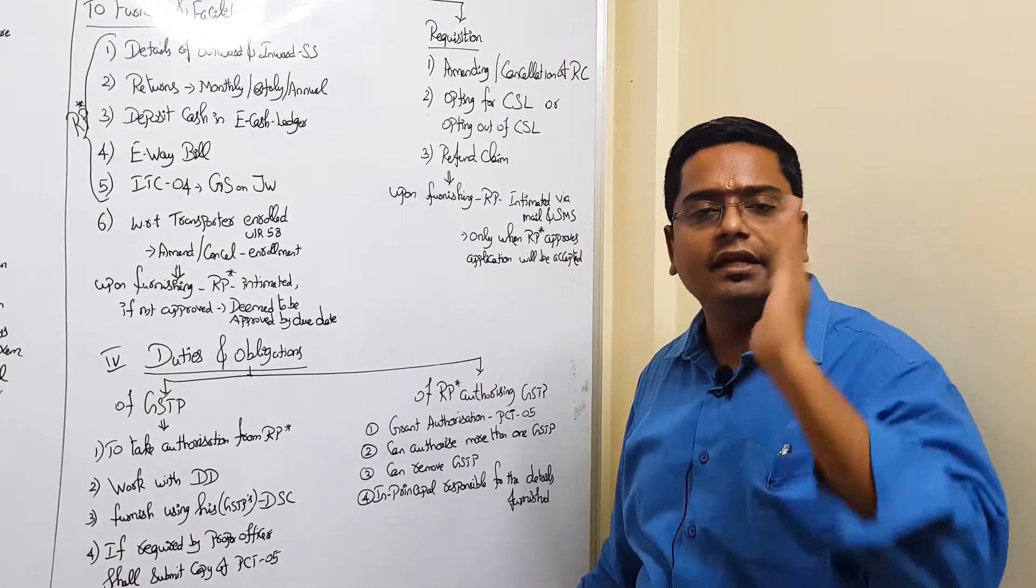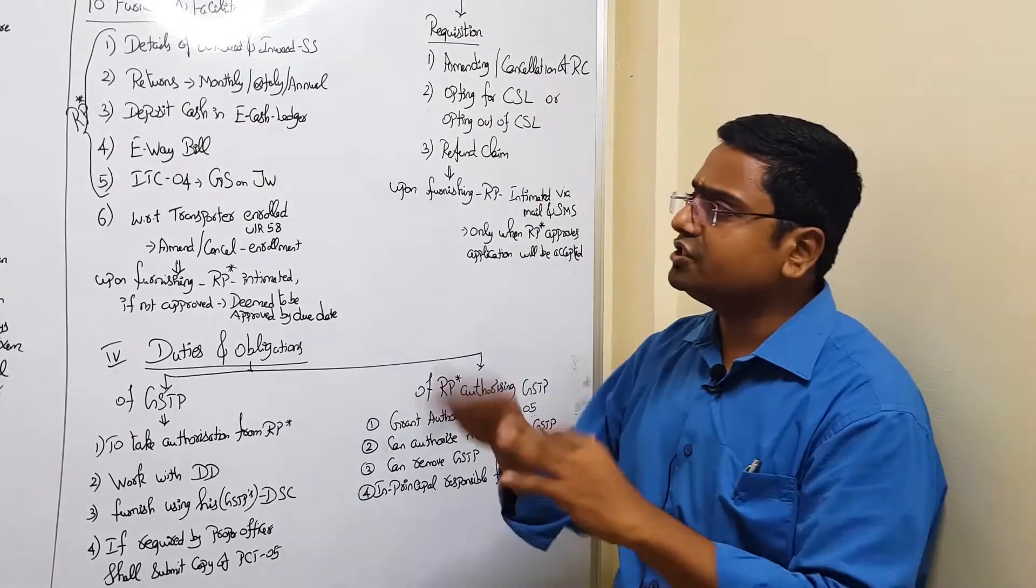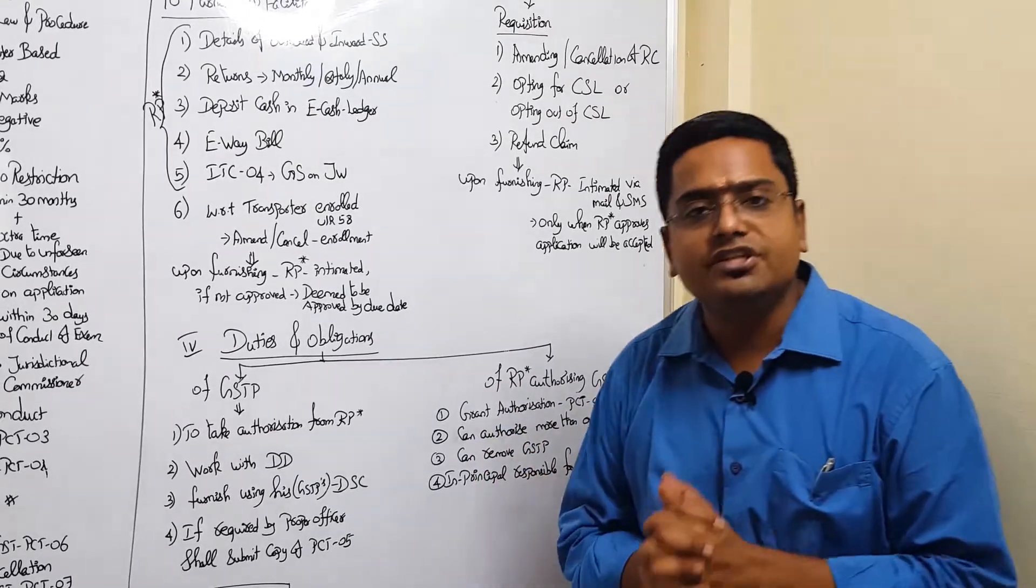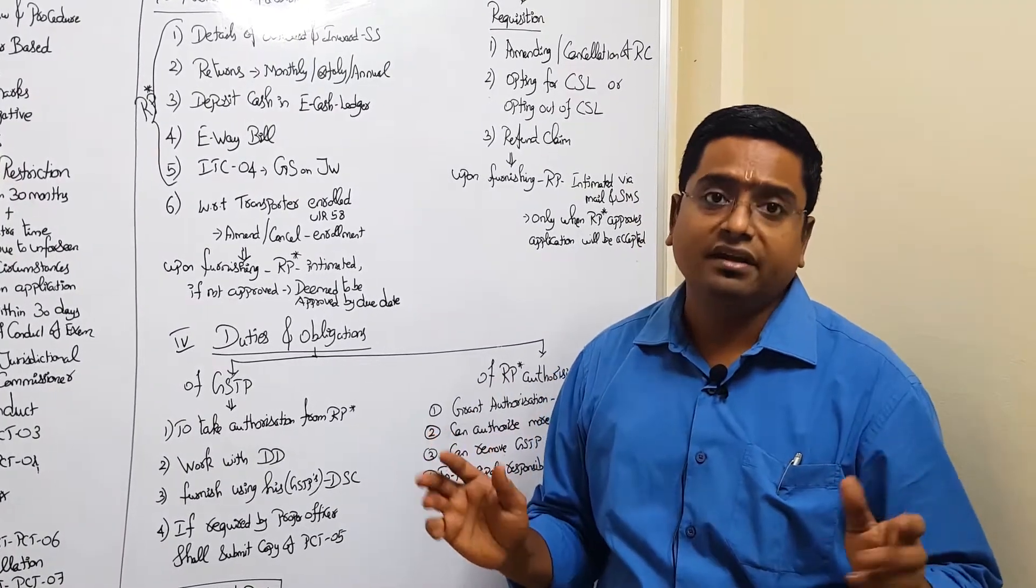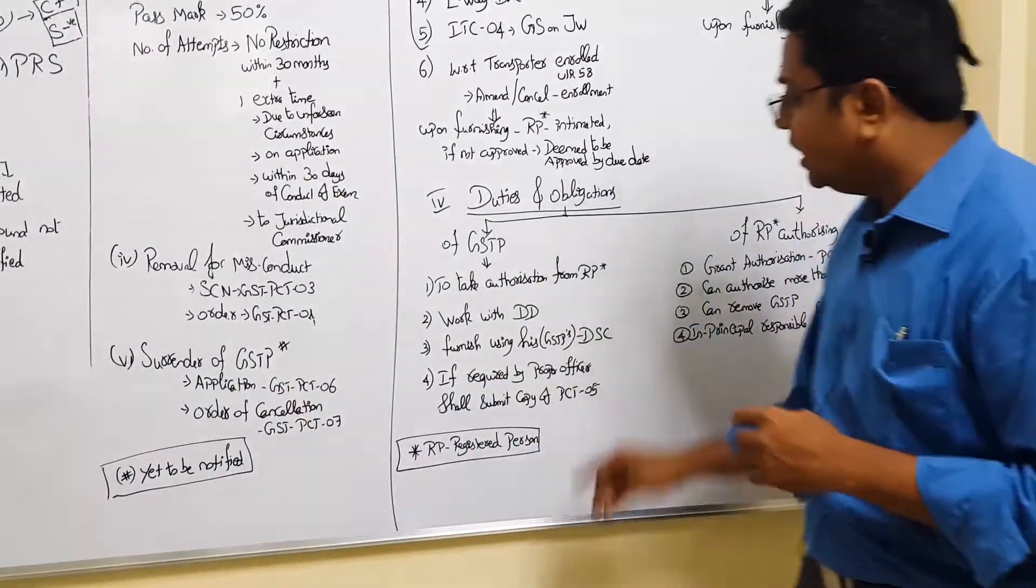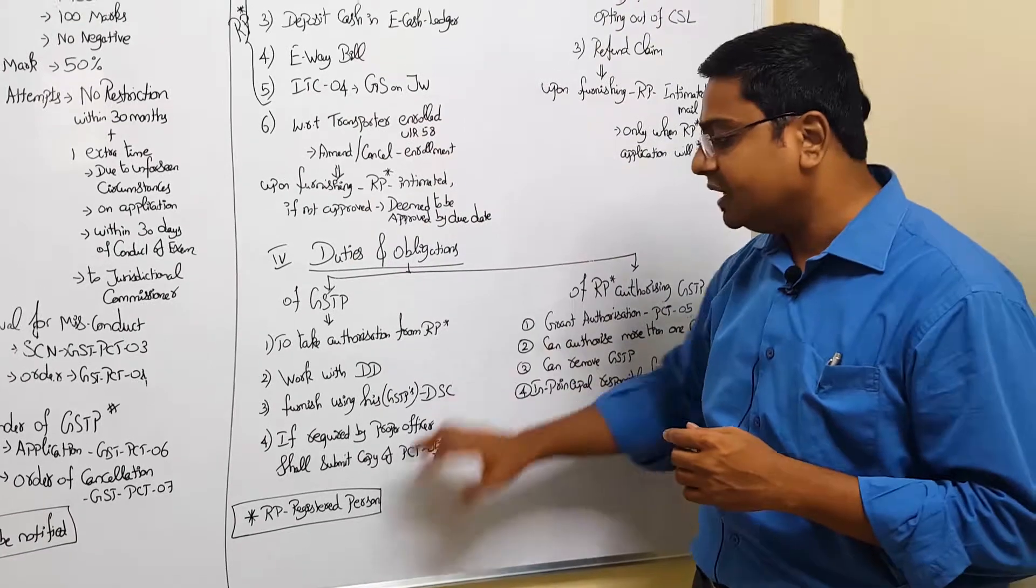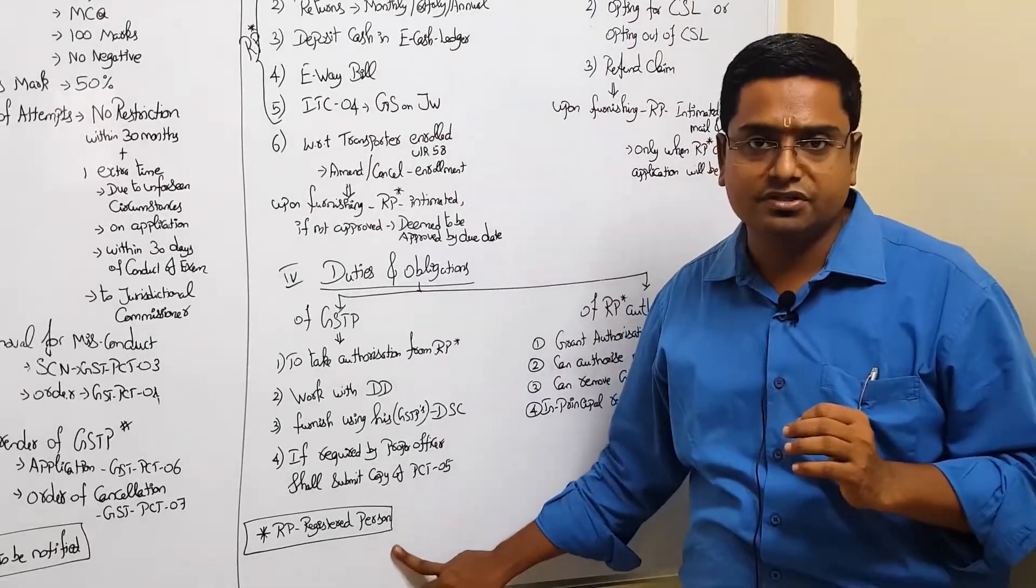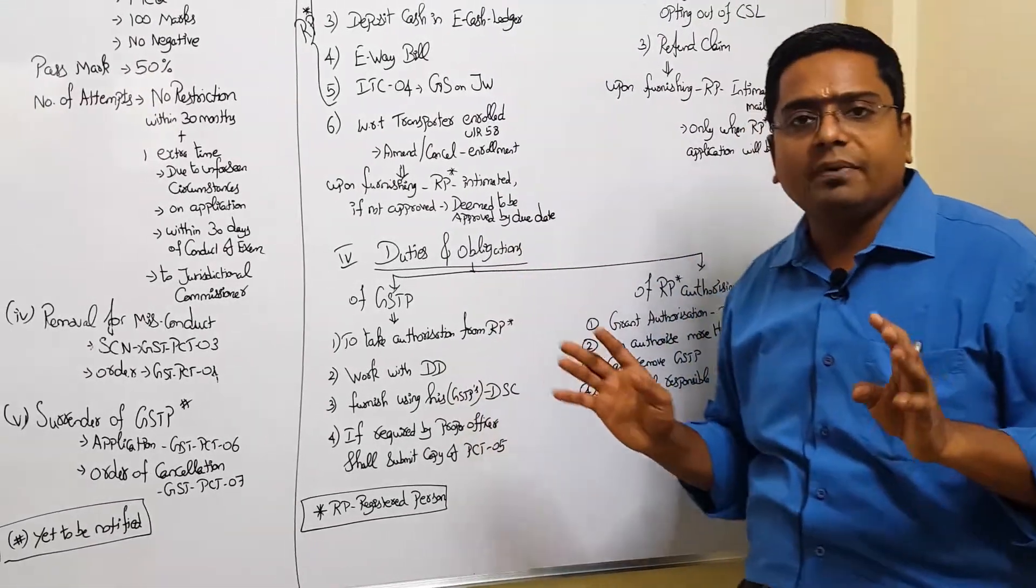Finally, the principal responsibility of ownership of details furnished by the GSTP rests with RP, meaning thereby who is responsible for the details furnished by GSTP? It is the registered person. And this is a small summary provision of the concept called GSTP for your examination purpose. And remember the surrendering of GSTP concept is yet to be notified. And RP here - everywhere I used RP - RP stands for registered person.